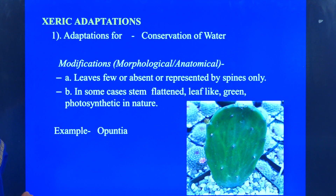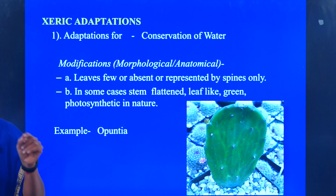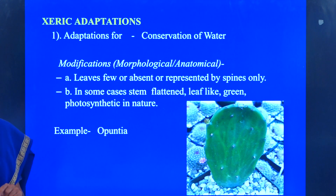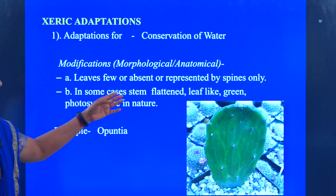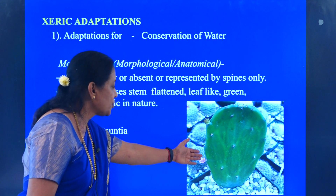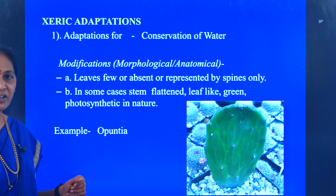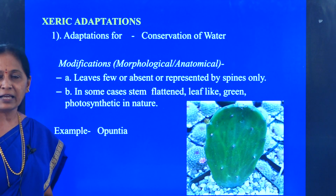The morphological and anatomical modification seen here: the leaves are few, absent, or represented by spines. In some cases, the stem is flattened and leaf-like, green, and can perform the function of photosynthesis. The stem is modified into a green, dorsiventrally flattened structure which performs the function of the leaf. Here you will find the pictorial representation of Opuntia. Xeric adaptation to conserve water — the classic example is Opuntia.